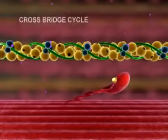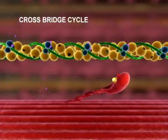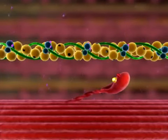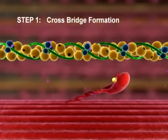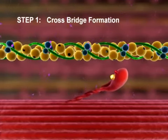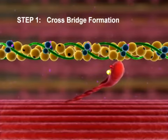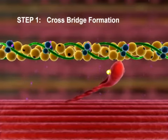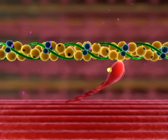A crossbridge cycle may be divided into four steps. Step 1: Crossbridge Formation. The activated myosin head binds to actin, forming a crossbridge. Inorganic phosphate is released, and the bond between myosin and actin becomes stronger.